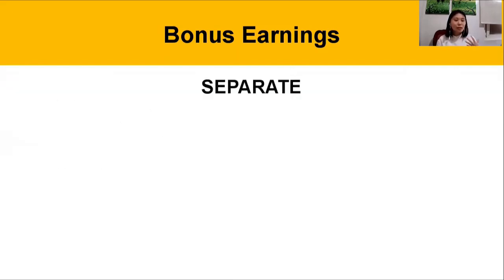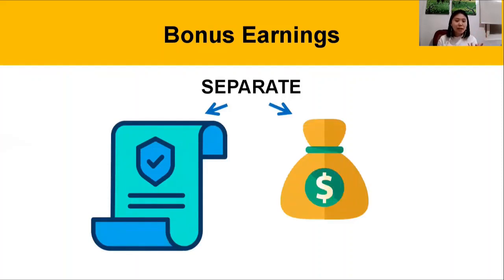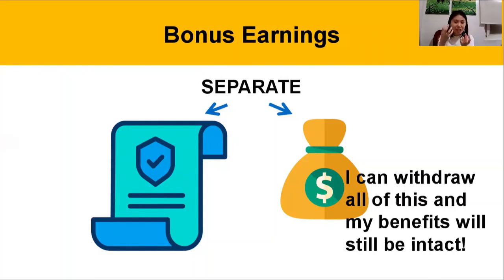One thing I would like to highlight about an endowment plan or a traditional plan is that the policy or the protection component is separate from the earnings component. As mentioned earlier, you can withdraw all the earnings component and the benefits will still be intact. They're not living under one roof wherein the earnings are the ones sustaining the plan — they are separate; the bonus is truly just a bonus.